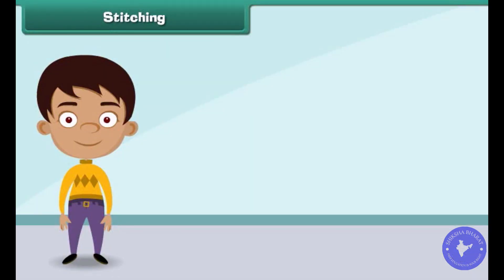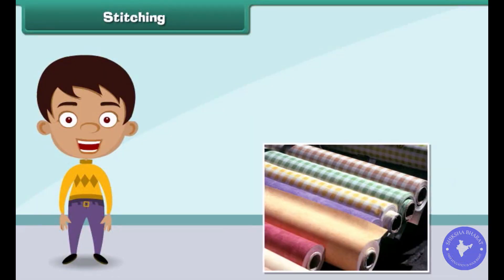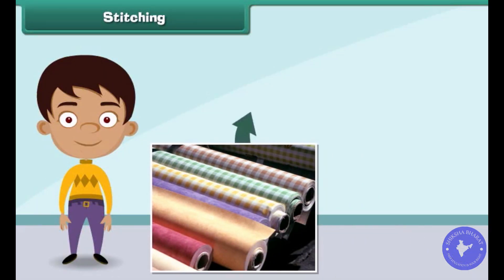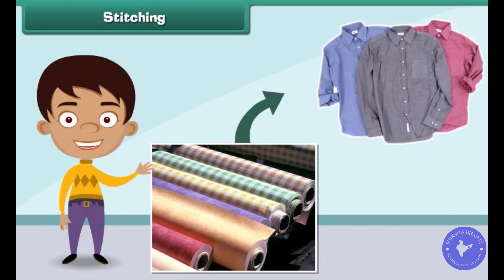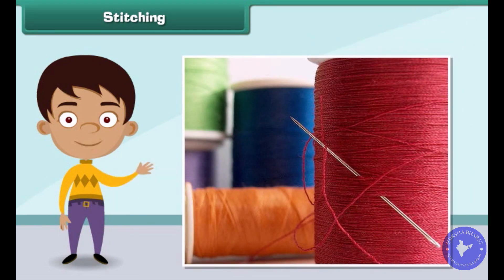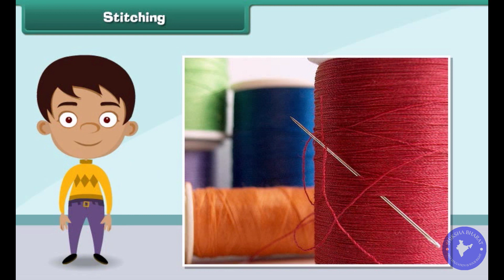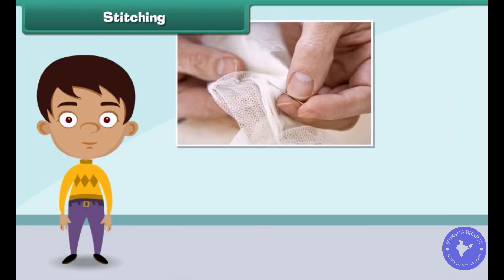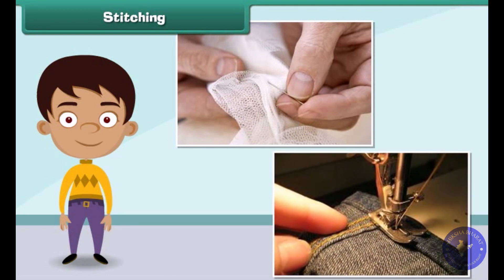Stitching is the process by which fabrics are converted into clothes. It involves sewing a fabric with needle and thread. In olden days, stitching was done by hand, but nowadays stitching is done with machines.